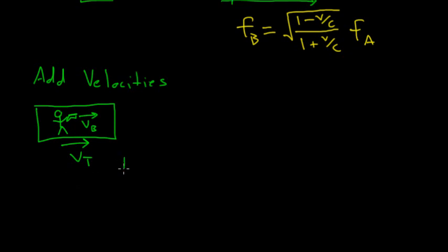So if I were standing on the ground, according to classical physics, the velocity that I'd see the bullet moving with, so velocity of the bullet for me is clearly just going to be VT plus VB.